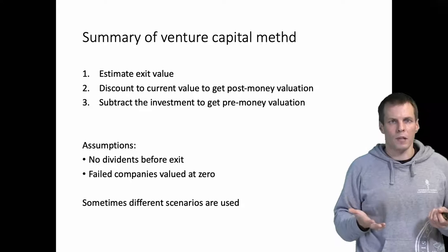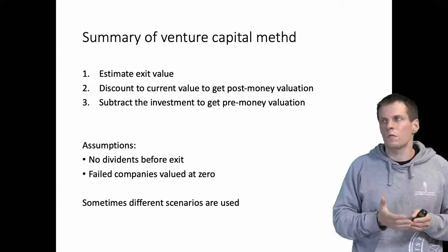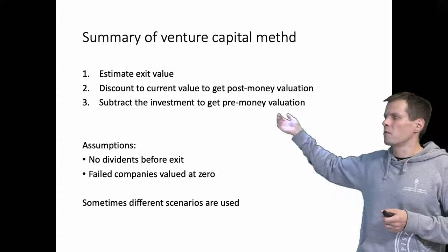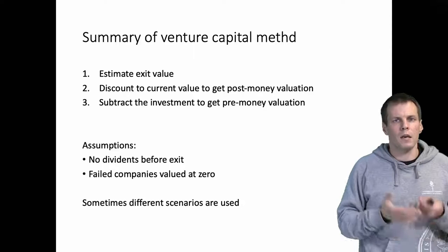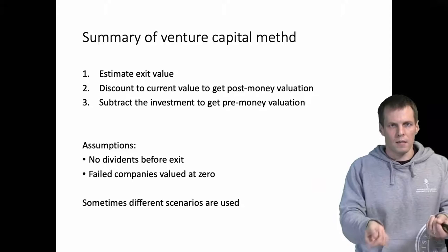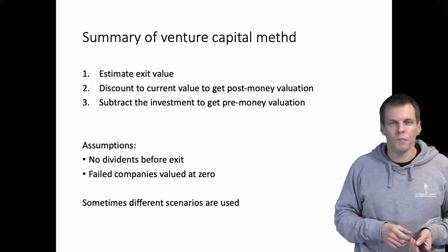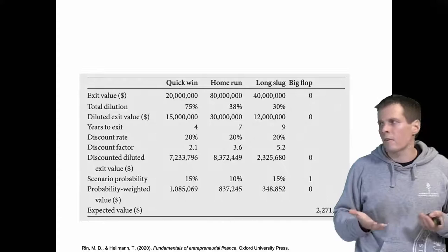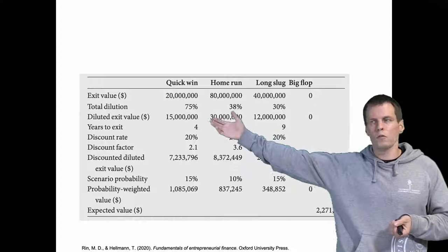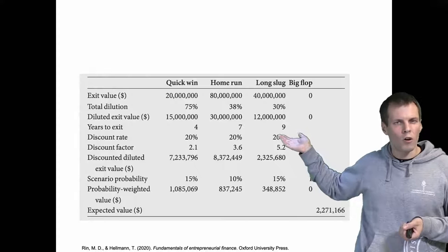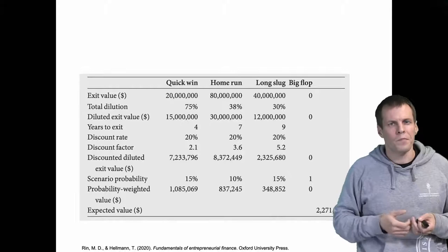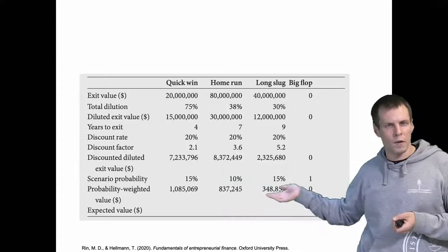Summary of the venture capital method: estimate the exit value using various techniques, discount to the current time to get post-money valuation, then subtract the investment to get pre-money valuation. Key assumptions are: no dividends before exit (all money is invested in growth), and failed companies are valued at zero. Sometimes multiple scenarios are calculated — for example, a quick win with an early exit at 20 million euros, a mid-term exit at 80 million, and a later exit at 40 million euros.